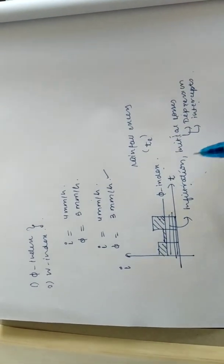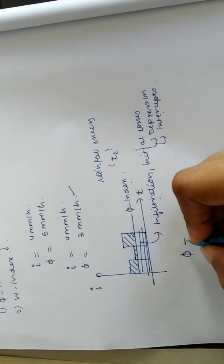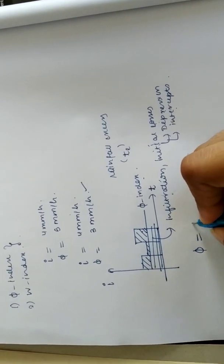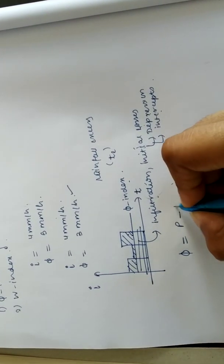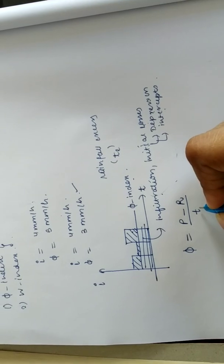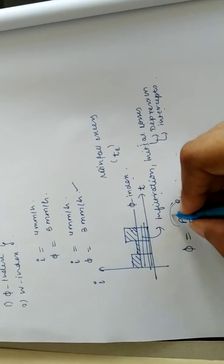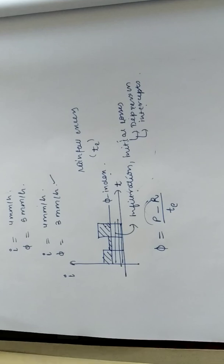This is nothing but phi index. I can write it as phi index is nothing but whatever rainfall is occurring minus runoff divided by the time for which this runoff is occurring. This time is denoted by T.